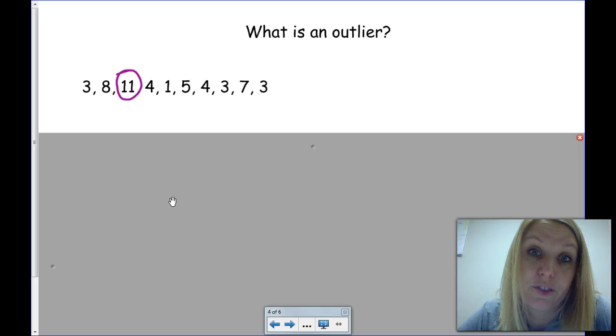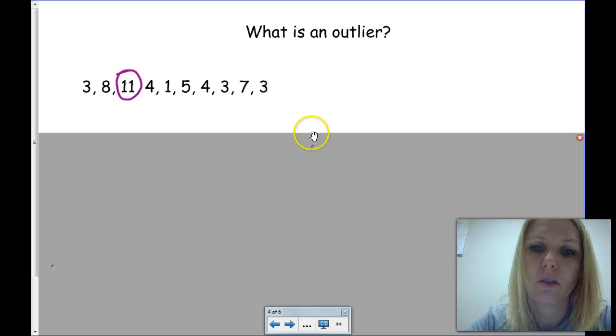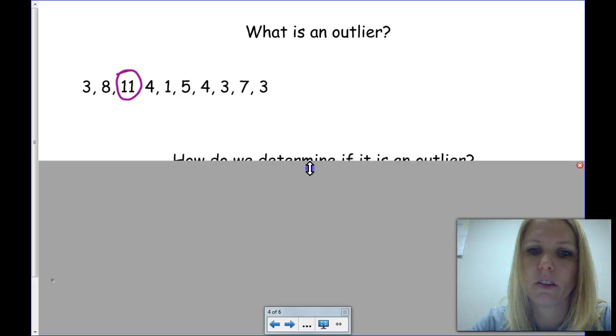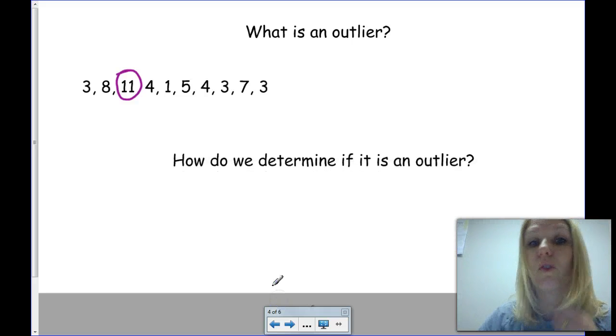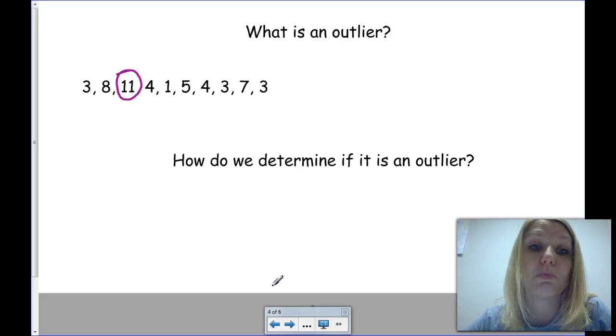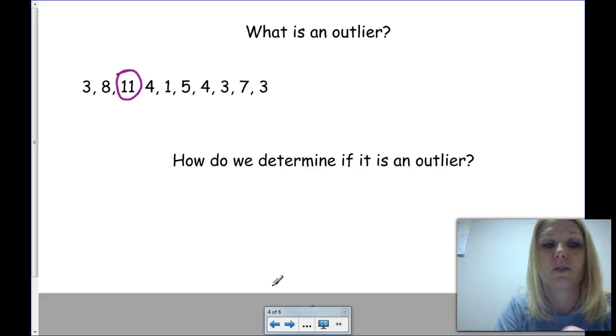But how can we know for sure if it's an outlier? What do we do? Well, let's check that out. If you look down here below, I'm going to show you the formula of how to find an outlier. But the first thing we need to do is put these numbers in order from smallest to largest, just like you would do if you're finding the median. So, let's do that.